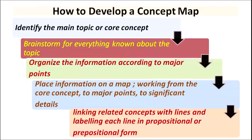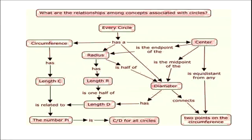The fifth stage is linking related concepts. After placing information in different sections, we link those related concepts with lines and arrows, and label each line in propositional form. If you look at the diagram, you can see that circumference, radius, and center have been given in arrow form and connected with each other. Even the concepts of diameter and center are all interconnected with each other.